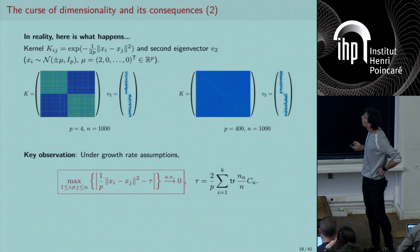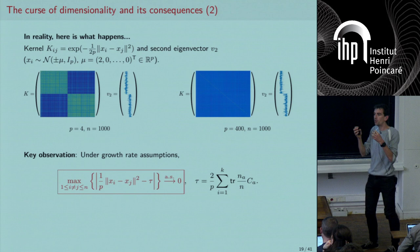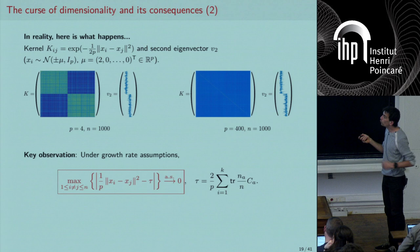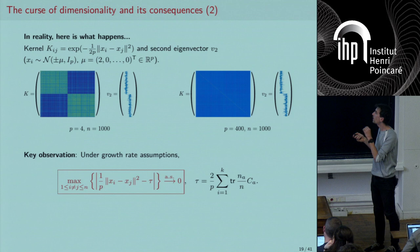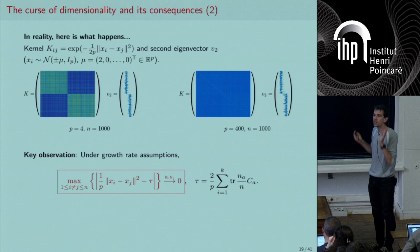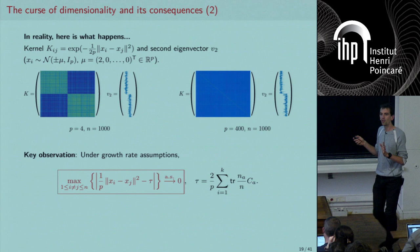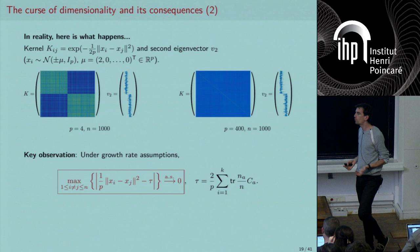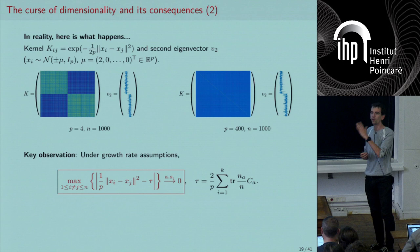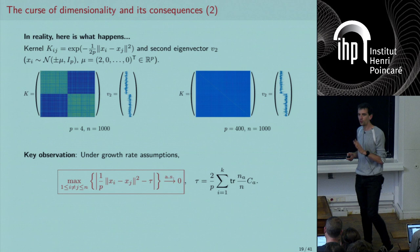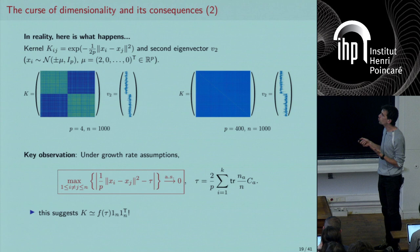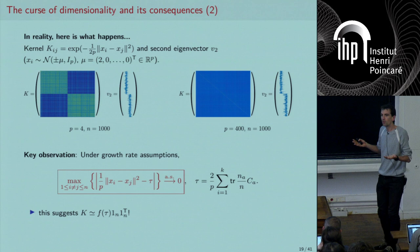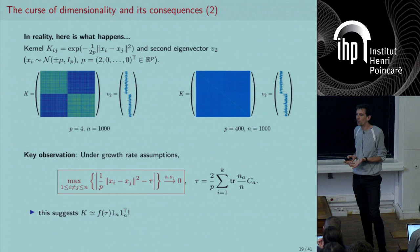This can be proved: under the non-trivial growth conditions, the Euclidean distance between x_i and x_j converges to a constant τ regardless of which classes i and j belong to. So K asymptotically looks like a matrix with all entries equal to f(τ) — yet spectral clustering still extracts information, which is very counter-intuitive.